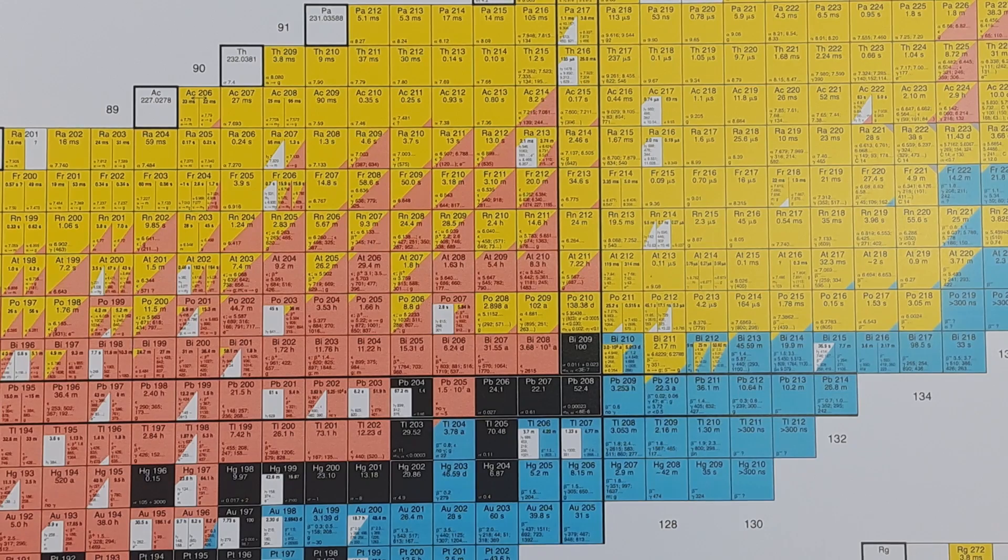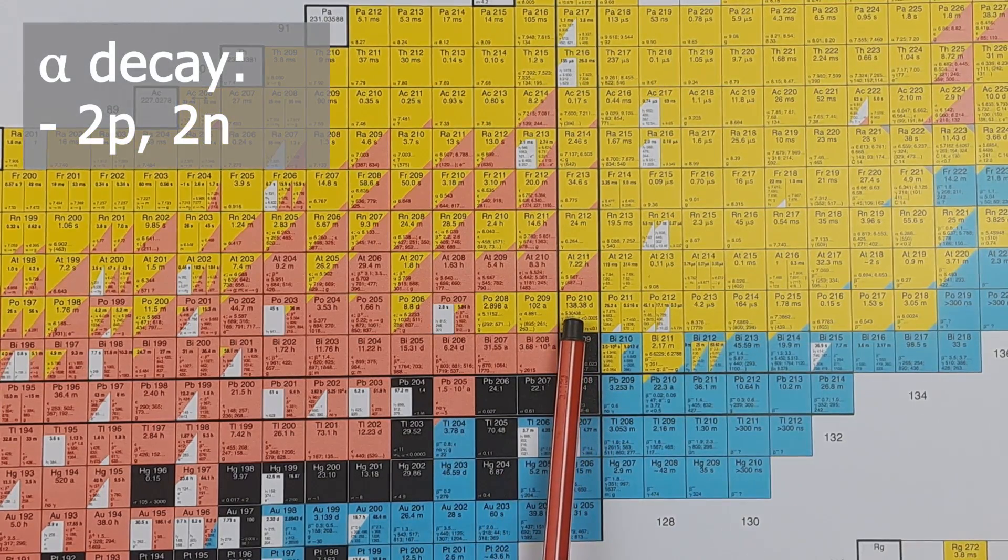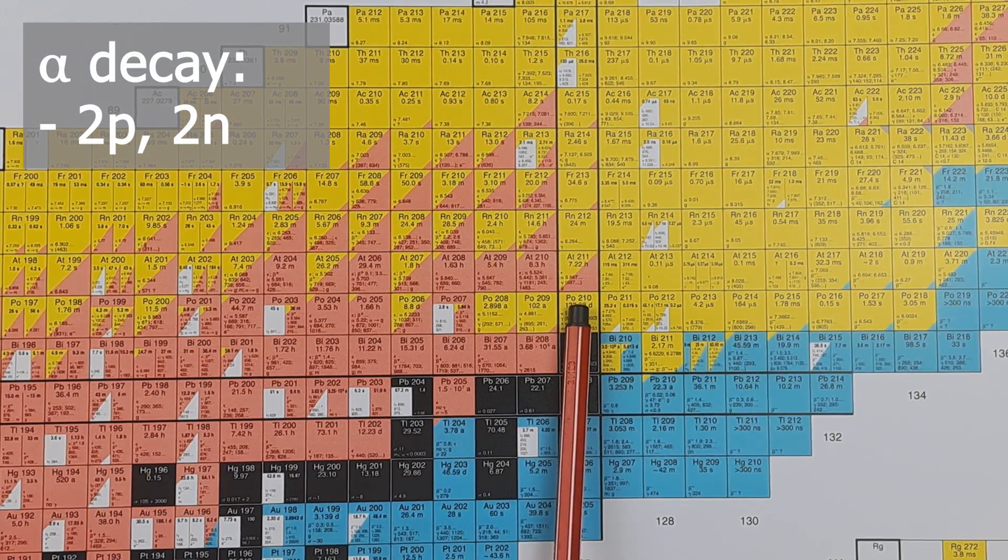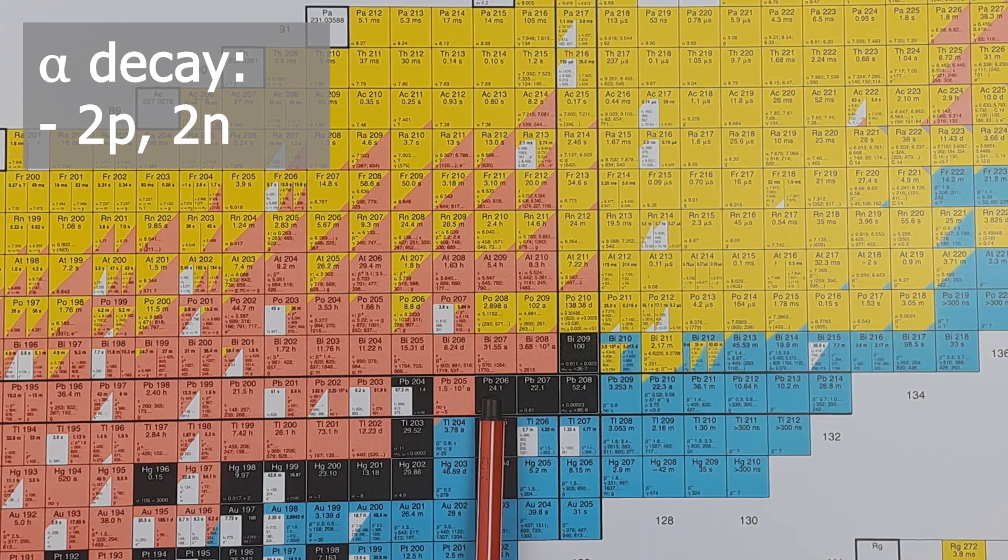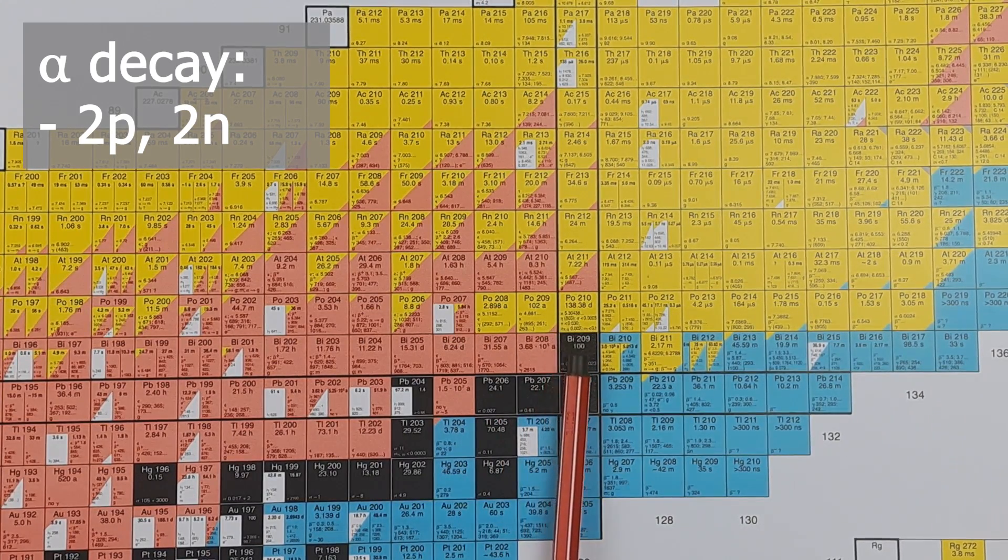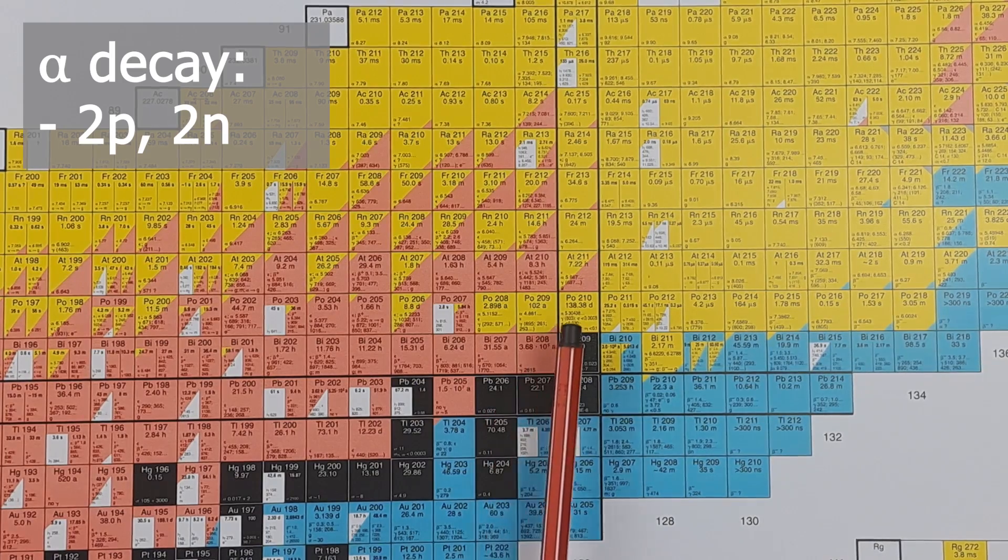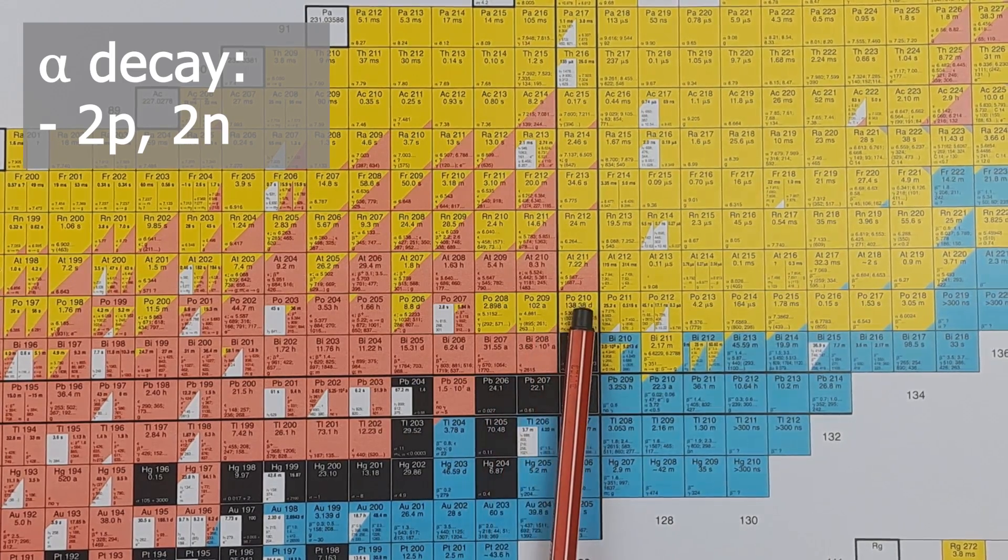Now, we have this yellow patch back here. Those are the alpha emitters. These are extremely heavy nuclei that want to reach the valley of beta stability as quickly as possible. So, during an alpha decay, two protons and two neutrons are emitted immediately. No time for any transformations.